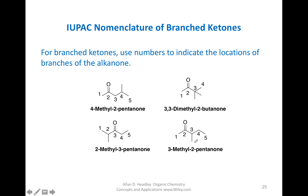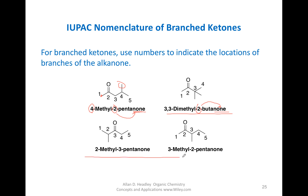Here are some more examples. Start numbering at the end closest to the carbonyl — once you have your numbering system, it's easy to provide the name. For five carbons: pentane, change the E to ONE — pentanone. Indicate the position on carbon 2, with a methyl group on carbon 4: 4-methyl-2-pentanone. For four carbons: butanone on carbon 2. You can pause the video here and work out these examples.